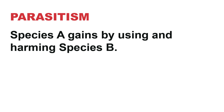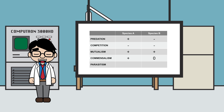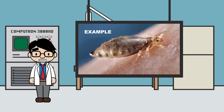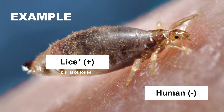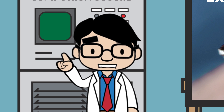Finally, there's parasitism. This is where one species gains by using and harming another species — so species A gets a win, and species B loses out because it gets hurt. An example of parasitism can be found with humans and lice. These parasites drink our blood, causing irritation. Lice benefit by getting food and a home, while we get an itchy scalp in return.